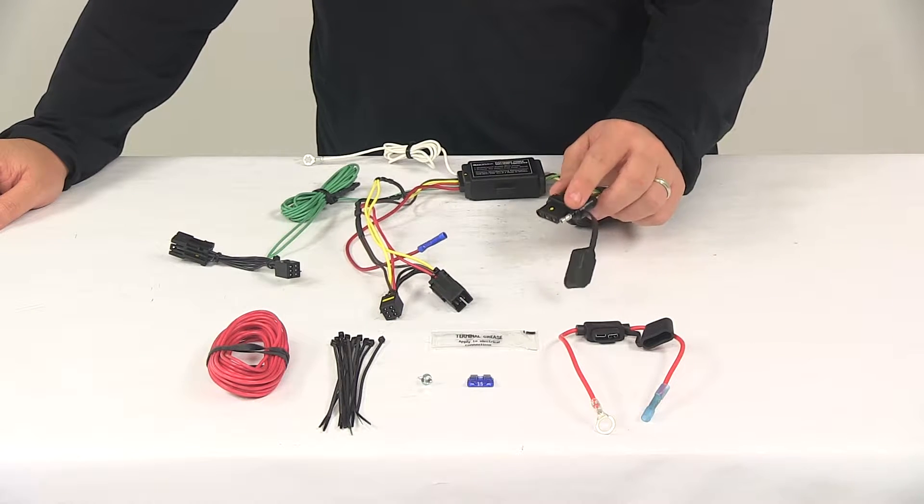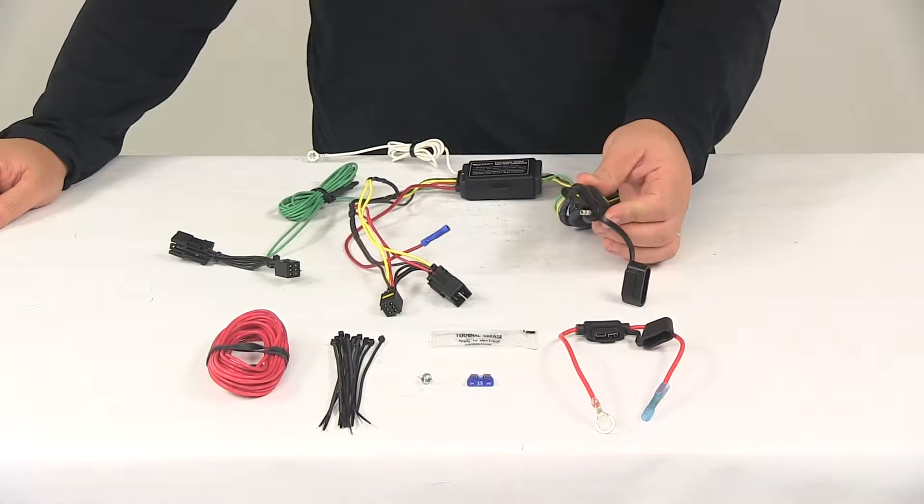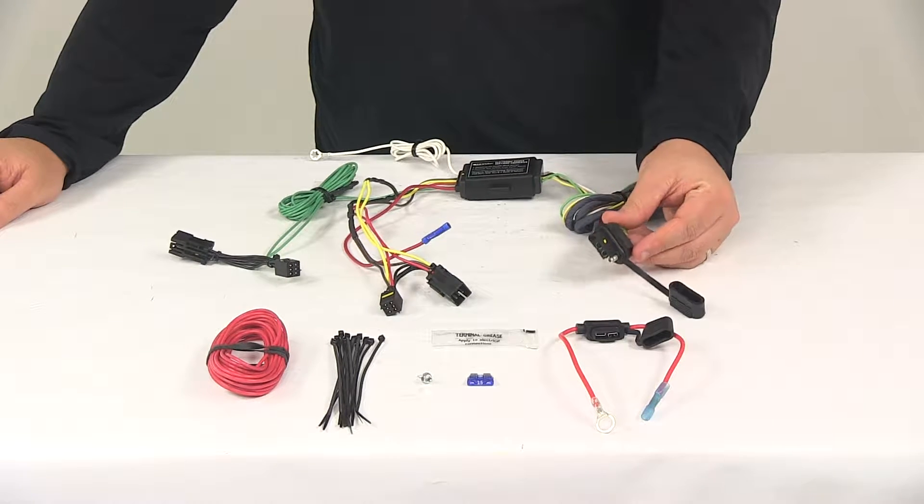It's going to provide a four-way flat connector at the back of your vehicle to power your trailer signal lights. This is compatible with five pole, six pole and seven pole adapters.